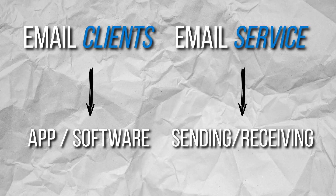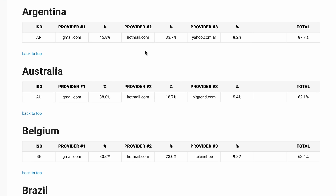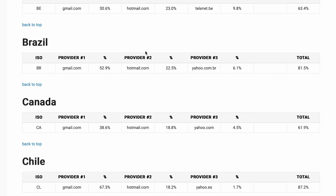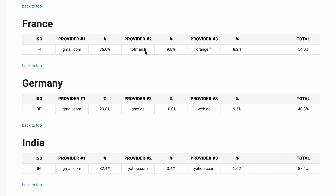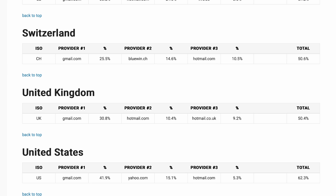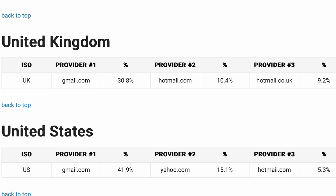An email service is the actual provider doing the sending and receiving of emails — you'll typically see which provider people use by the domain name: Gmail, Yahoo, Hotmail, or if you're old like me, AOL. As an email service or provider, there really isn't a debate here, because according to realsender.com, in every country on record except China, Gmail is the number one email service provider — specifically 42% of all emails in the US, followed by Yahoo at 15% and Hotmail at 5%.